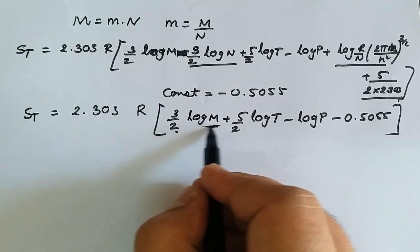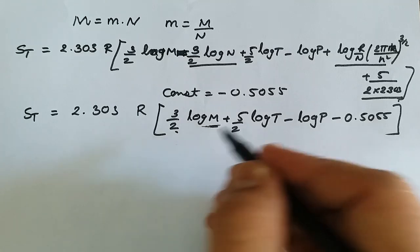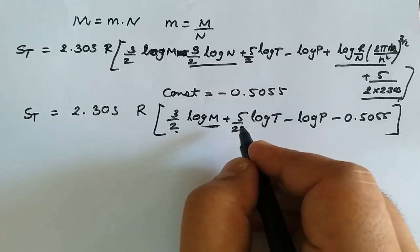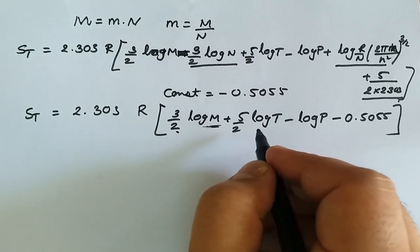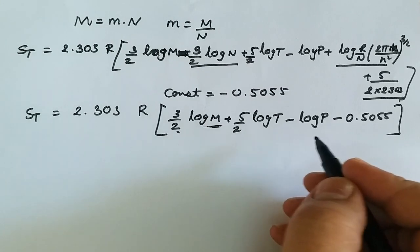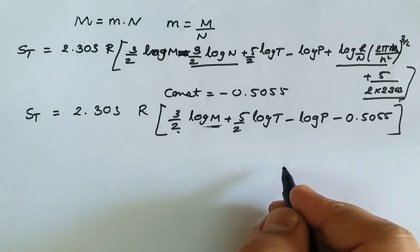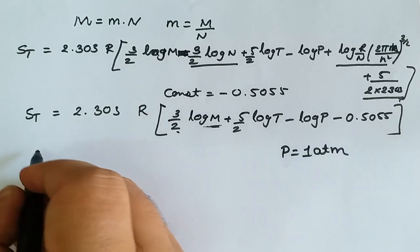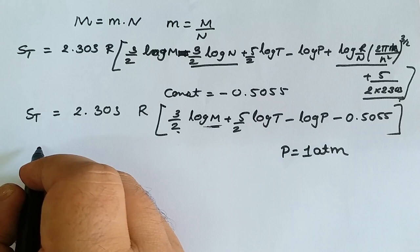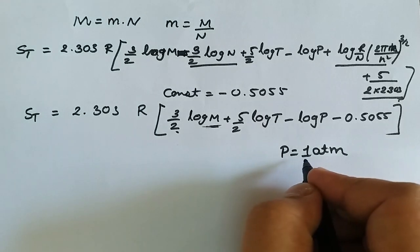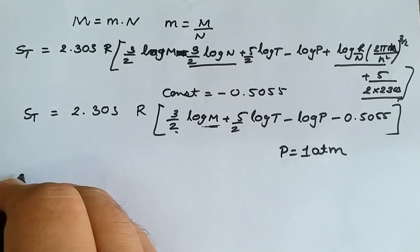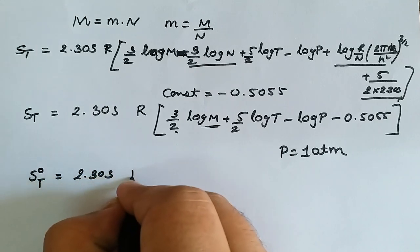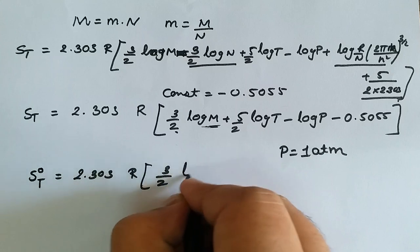This equation gives the value of translational entropy for a monoatomic gas, provided the molar mass, temperature, and pressure are known. This equation is known as the Sackur-Tetrode equation. Further, if the system is at standard state, the pressure equals one atmosphere and the entropy becomes the standard entropy, S°_T.